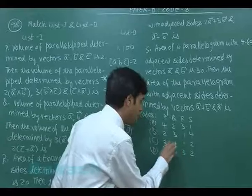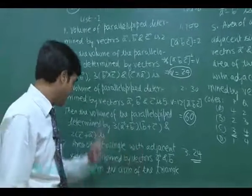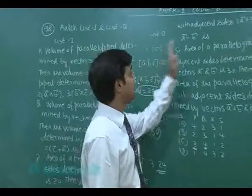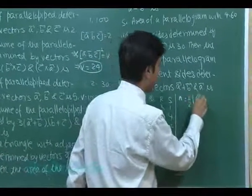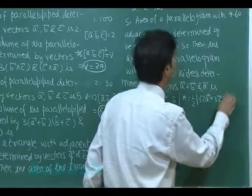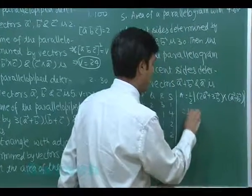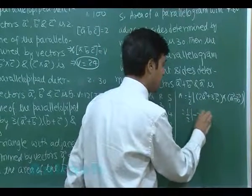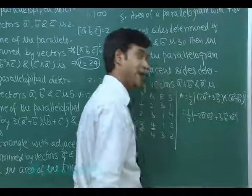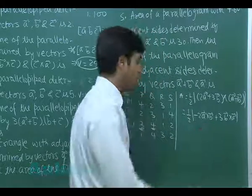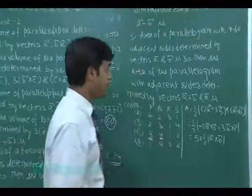Third: area of a triangle with adjacent sides determined by vectors a and b is 20. Find the area with adjacent sides 2a+3b and a−b. Area = ½ |( 2a+3b) × (a−b)|. Expanding: 2a×a = 0, then −2a×b, plus 3b×a = −3a×b. So we get −5(a×b), giving area = ½ × |−5(a×b)| = 5 × ½|a×b|.